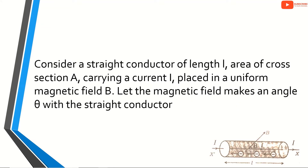Consider a straight conductor of length L, area of cross section A, carrying a current I, placed in a uniform magnetic field B. Let the magnetic field make an angle theta with the straight conductor.